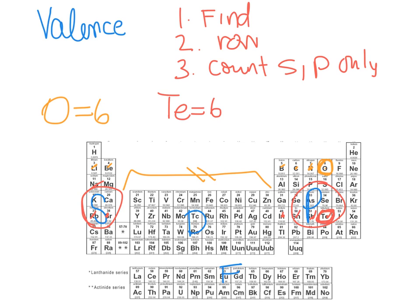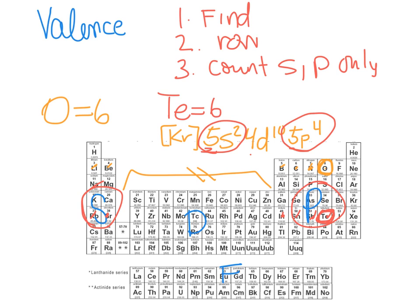If you go back to tellurium's shorthand configuration, we would start with Kr, then continuing from Kr we would have 5s², 4d¹⁰, 5p⁴. If you look at the energy levels, the outer energy levels are the 5s and the 5p. Combining the S's and the P's is how we get our six — you have the two from the S and four from the P, which gives you six valence electrons for tellurium.